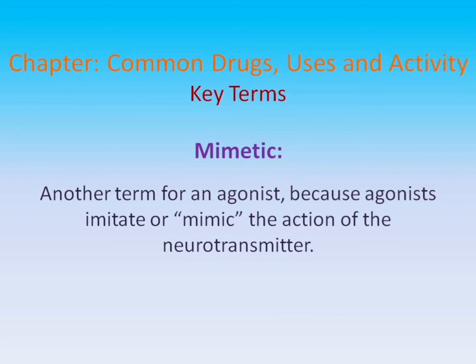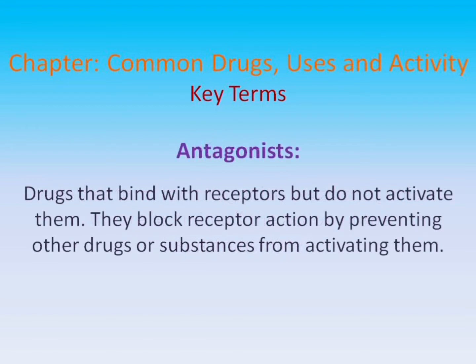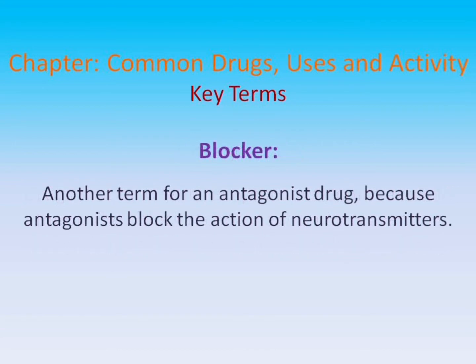Agonists: Drugs that activate receptors to accelerate or slow normal cellular function. Mimetic: Another term for an agonist, because agonists imitate or mimic the action of the neurotransmitter. Antagonists: Drugs that bind with receptors but do not activate them — they block receptor action by preventing other drugs or substances from activating them. Blocker: Another term for an antagonist drug, because antagonists block the action of neurotransmitters.